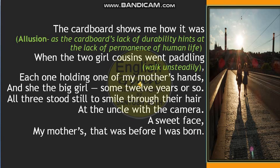The two girl cousins went paddling, each one holding one of the mother's hands, and the mother — the big girl — was around twelve years old at the time. All three are smiling through their hair as it is windy, standing still, with the camera held by the uncle. The mother's face in the picture is sweet and loving. This is all set before the poet was born. That concludes the first part; the second part will be discussed in the next video.